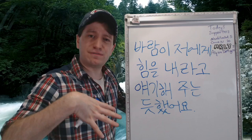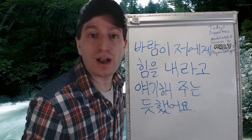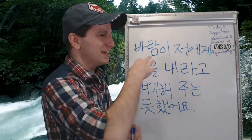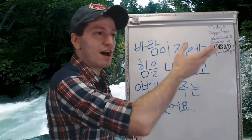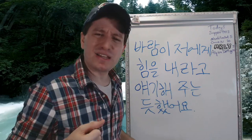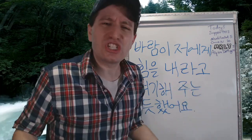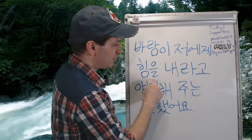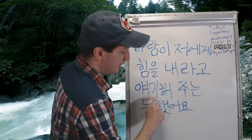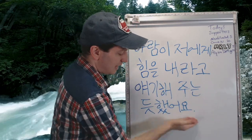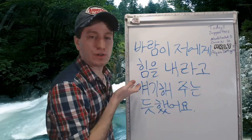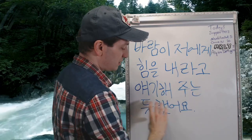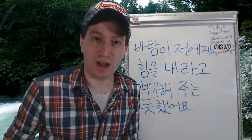One more 듯하다 example: 바람이 저에게 힘을 내라고 얘기해 주는 듯 했어요. It seemed as if the wind was telling me to cheer up. Maybe you're having a bad day and you're walking around, but the wind is blowing some leaves around — not being annoying, just being really calm and nice. And it seemed as if the wind was telling you to just cheer up. 바람이 — wind — 저에게 — to me — 힘을 내라고 — cheer up — 얘기해 주는 듯 했어요 — it seemed like it was telling me to cheer up. So it seemed like the wind was telling me to cheer up.